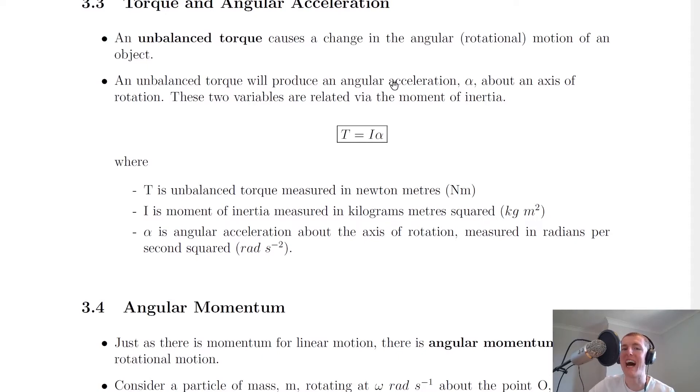Now an unbalanced torque will produce an angular acceleration alpha about an axis of rotation, just like an unbalanced force will produce a linear acceleration in a straight line for linear motion. These two variables are related via the moment of inertia I.